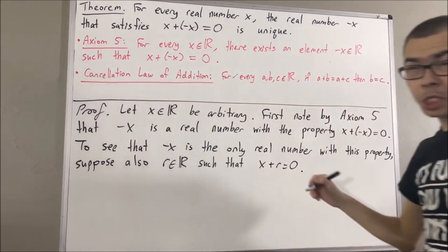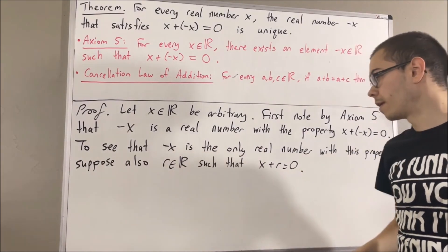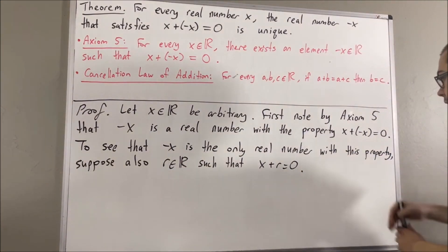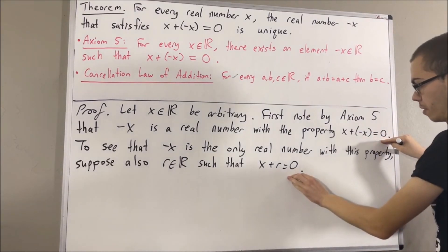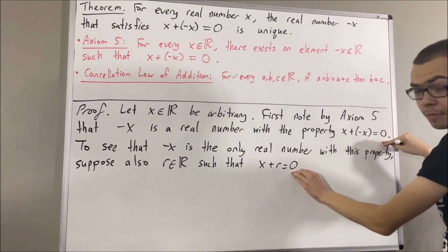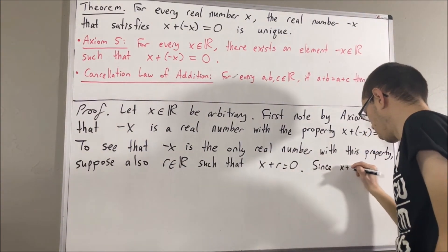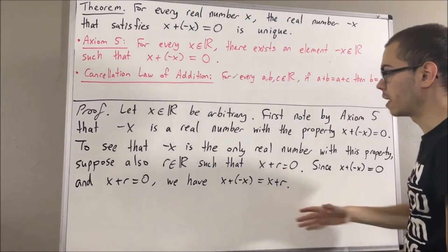From here, we want to show that the negative x is equal to r. Now we see that x plus the negative x is equal to 0, and x plus r is equal to 0. So, since these two guys are both equal to the same thing, they must be equal to each other.